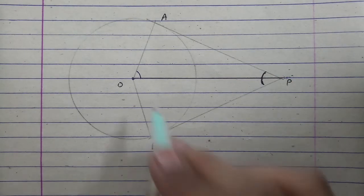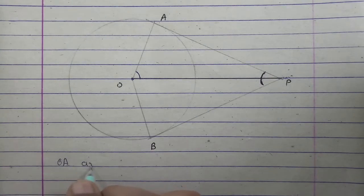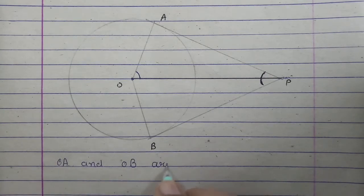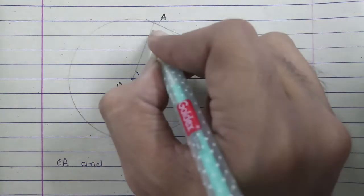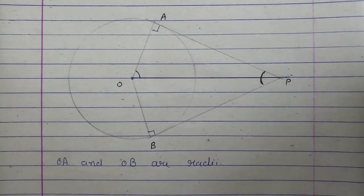First, clearly OA and OB are radii. These angles will be right angles.